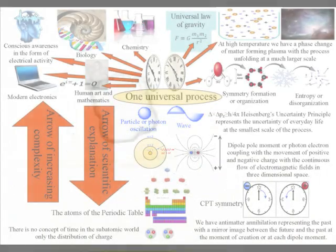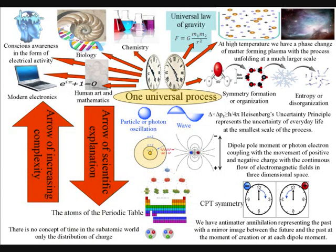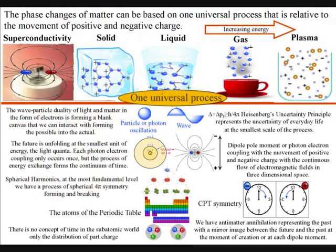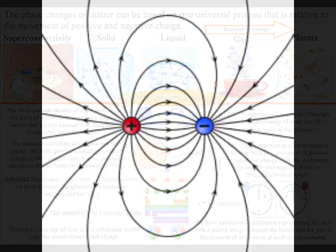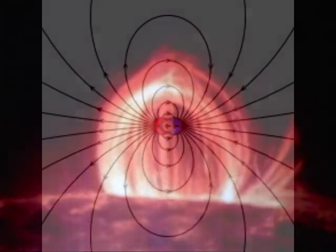In these videos I say that we have a geometrical process that is relative to the atoms of the periodic table, but at high temperatures we have a phase change in matter, with the same geometrical process unfolding over a much larger scale, with charge being able to cover a large area of interstellar space.